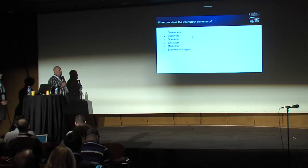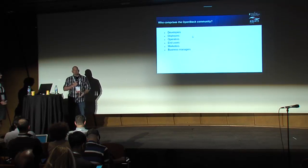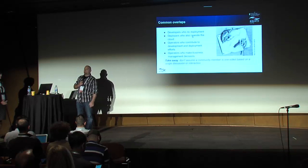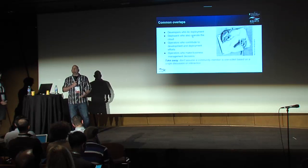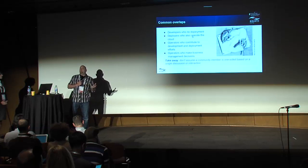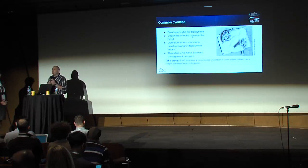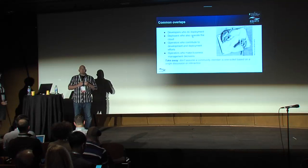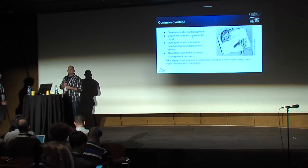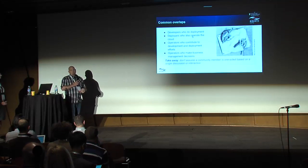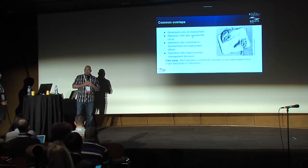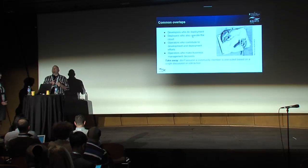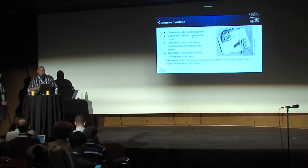What kind of people do we have in the community? All sorts — not just developers. We have deployers, marketing folks, business managers, operators. We have people that do development but also do deployment, deployers running operations, and operations folks making business decisions about the productization of OpenStack. Don't assume that when you're talking to a person in the community, whether on a mailing list or in person, that they only play a single role within their organization.